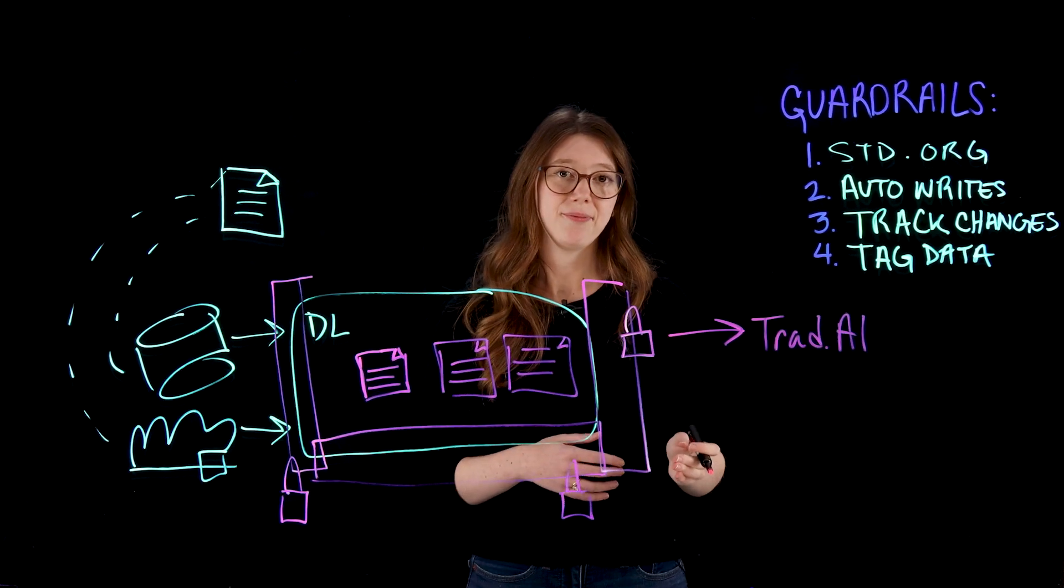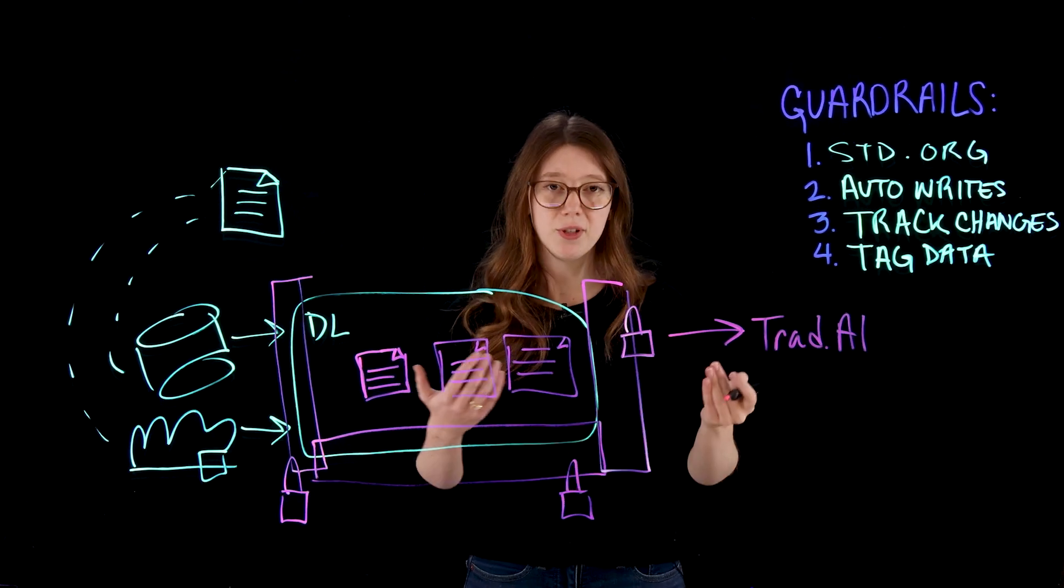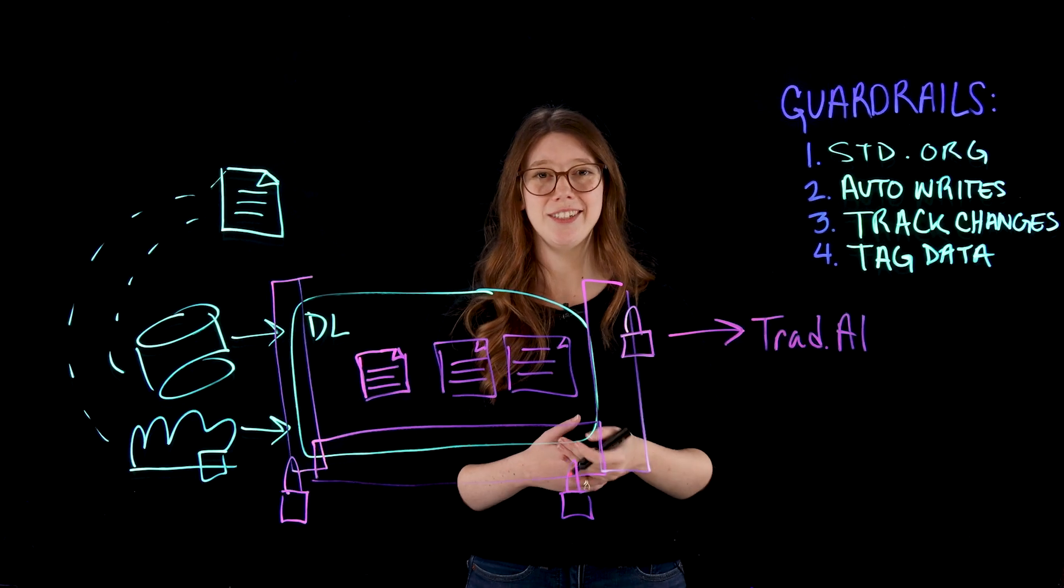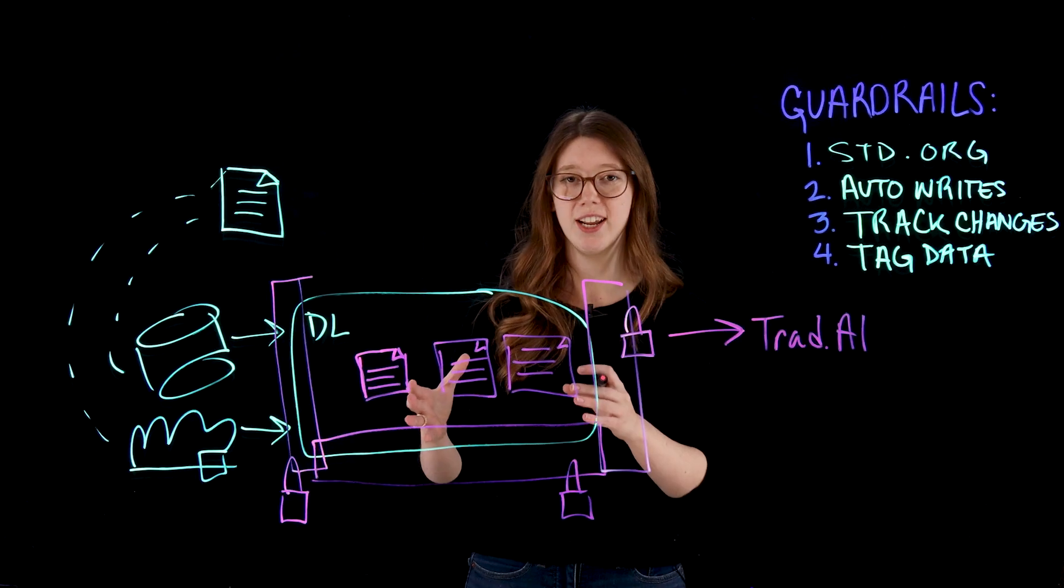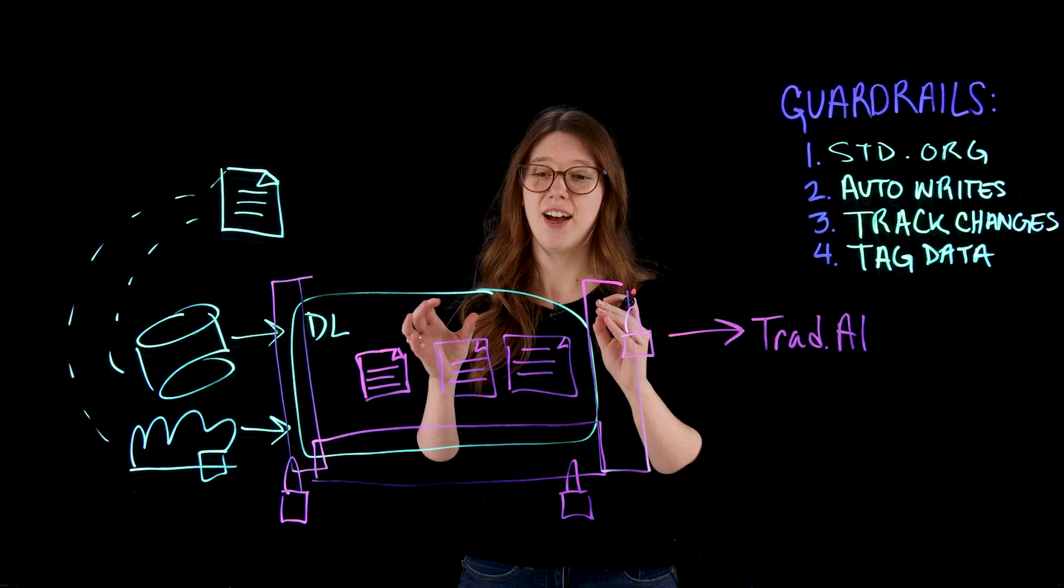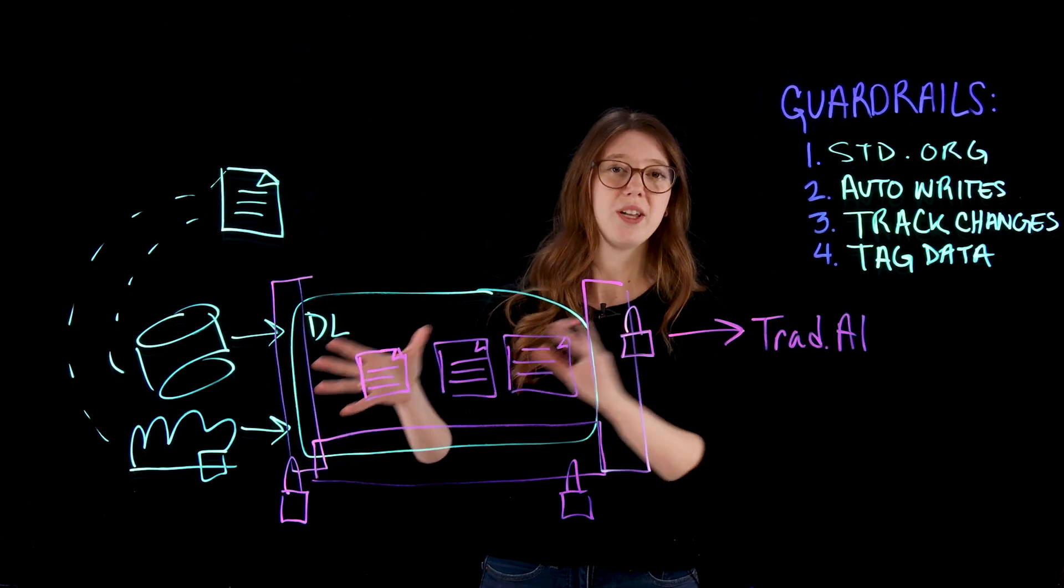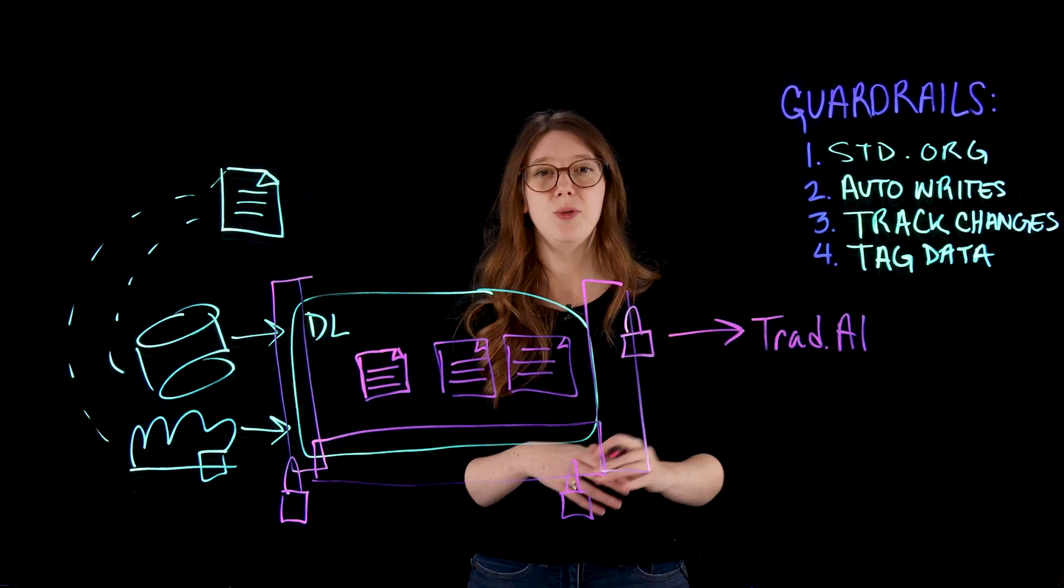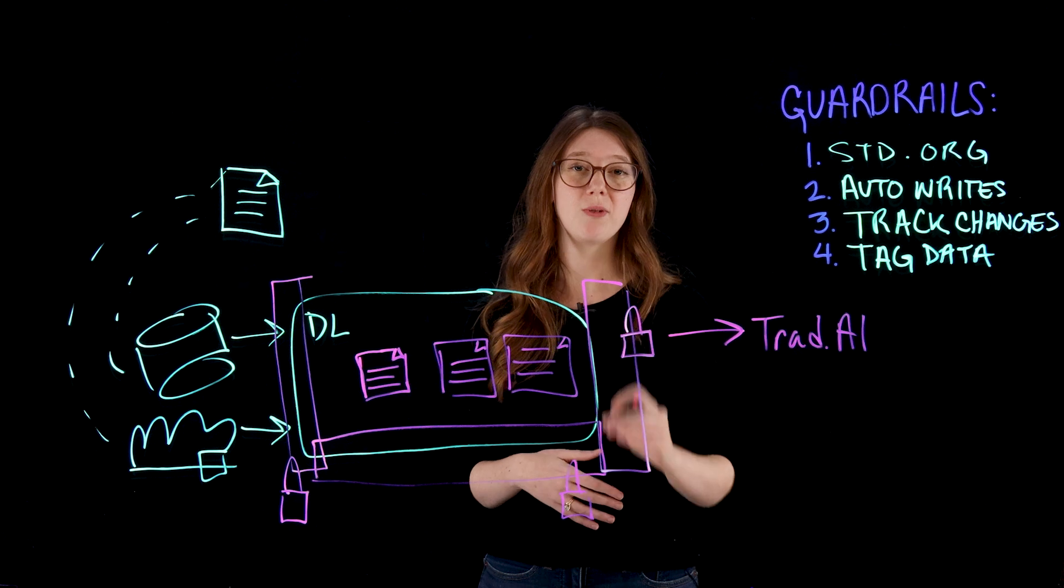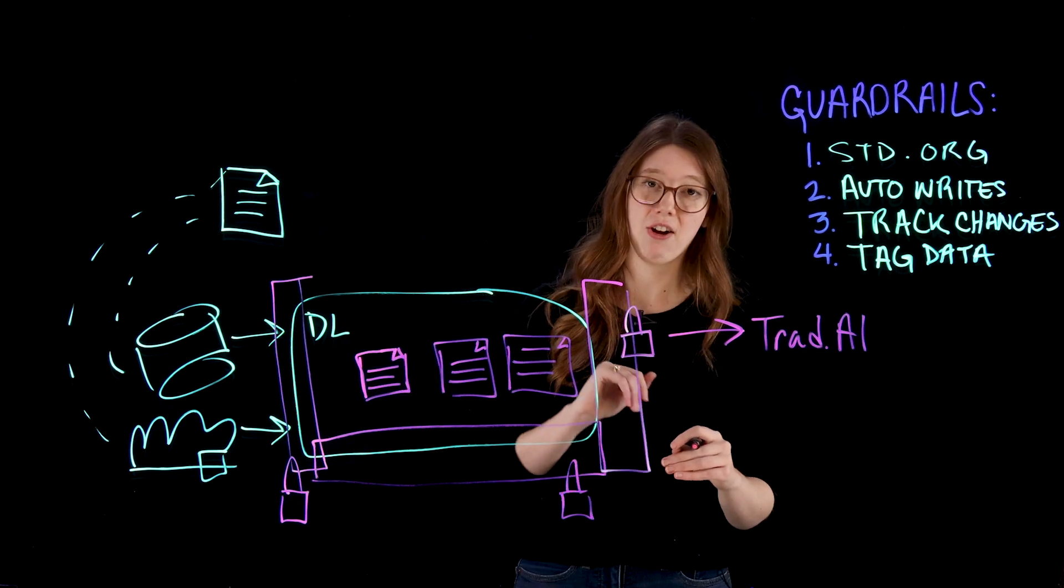And with traditional AI, this is the AI that we've been doing for decades. This is our regression. This is our optimization. We have our training and our testing set, and that's what we can actually bring in to train on a model. And we're going to make sure we're tagging that data, get all this good documentation linked.